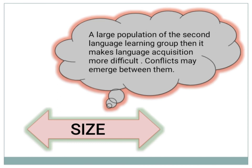The fifth factor is size. A large population in the second language learning group makes language acquisition more difficult, as conflicts may emerge. Simply put, the smaller the group size, the easier the language acquisition; the bigger the size, the more difficult it becomes.